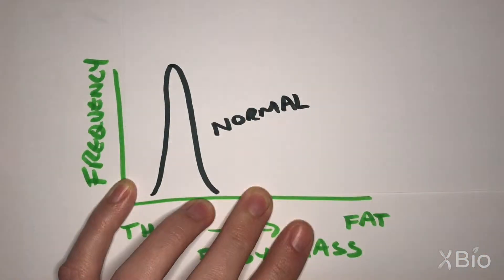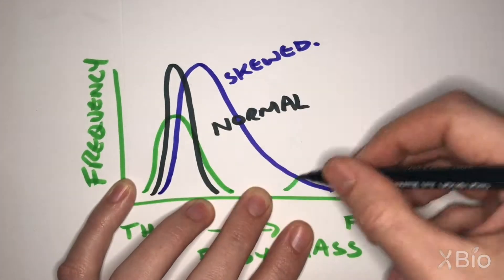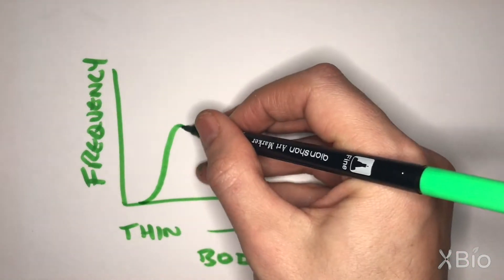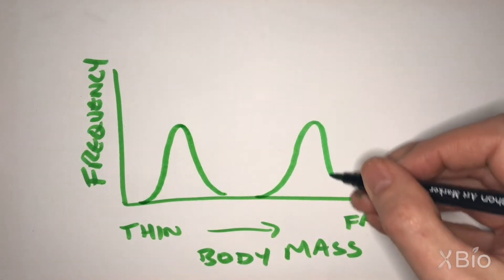Histograms can have a normal distribution, a skewed distribution, or a bimodal distribution. If we look at rabbit body mass, we see that this distribution is bimodal.